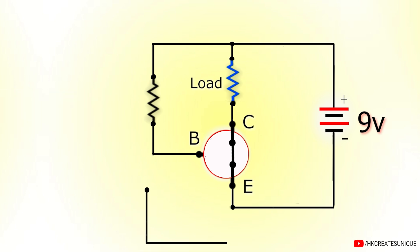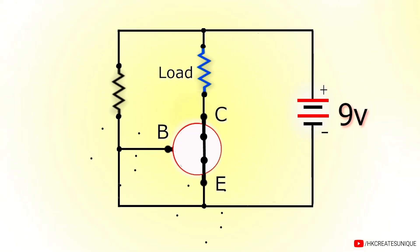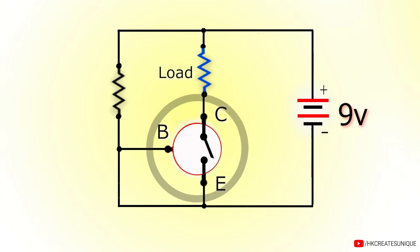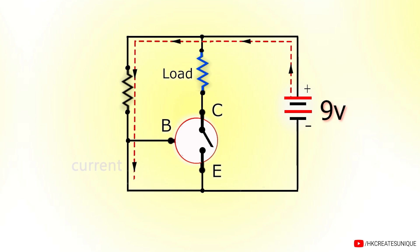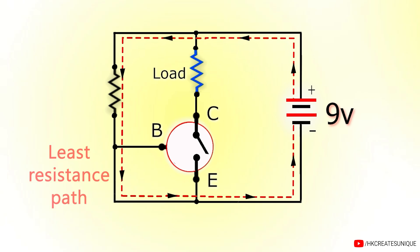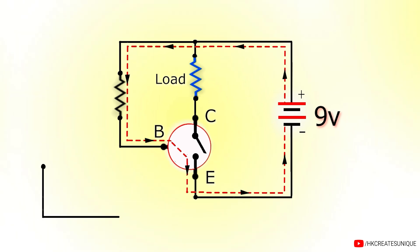If the base and emitter of the transistor are shorted using a conductor, the transistor turns off, because the voltage between base and emitter becomes 0 volts and all the current flows to the conductor as it is the least resistance path. However, when the conductor is removed, current easily flows to the base and the transistor turns on again.